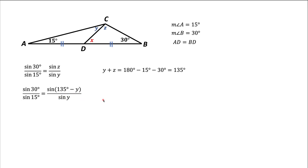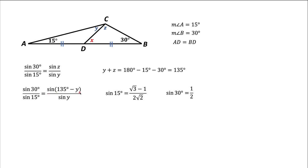Next we simplify. Sine of 15 degrees — we calculated this before as sine of 45 minus 30 degrees — and that gives square root of 3 minus 1, all over 2 square root of 2. Sine of 30 degrees is one half. That gives us the left-hand side. To handle the 135 degrees, we use the formula for sine of the difference of two angles: sine of 135 minus Y equals sine(135)·cos(Y) minus cos(135)·sin(Y).